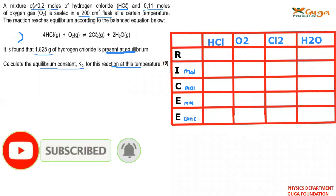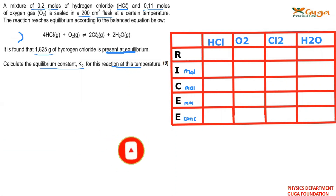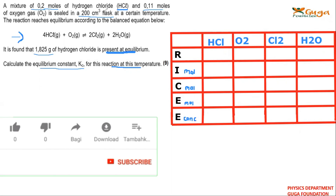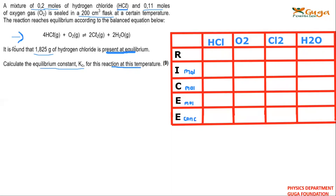Welcome guys. A mixture of 0.2 moles of hydrogen chloride (HCl) and 0.11 moles of oxygen gas is sealed in a 200 cm³ flask at a set temperature. The reaction reaches equilibrium according to the balanced equation: 4HCl + O₂ → 2Cl₂ + 2H₂O. It is found that 1.825 grams of hydrogen chloride is present at equilibrium. Calculate the Kc equilibrium constant for this reaction at this temperature.